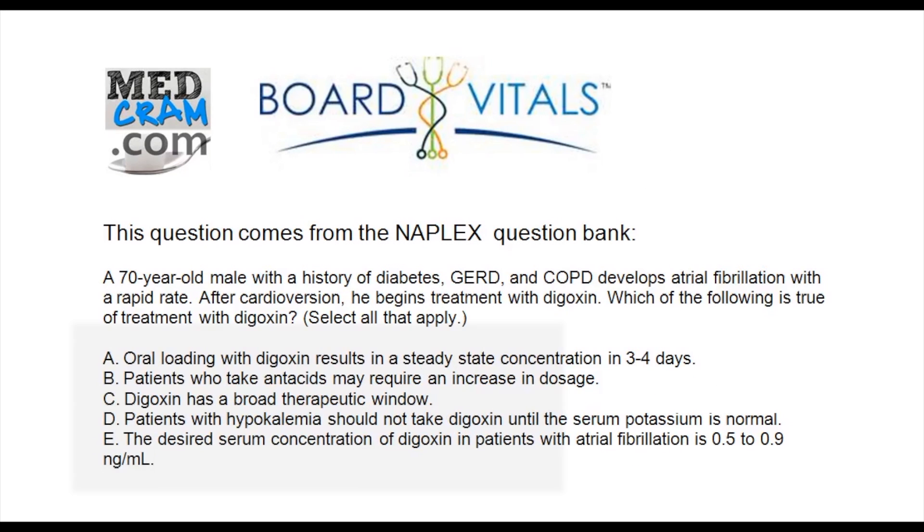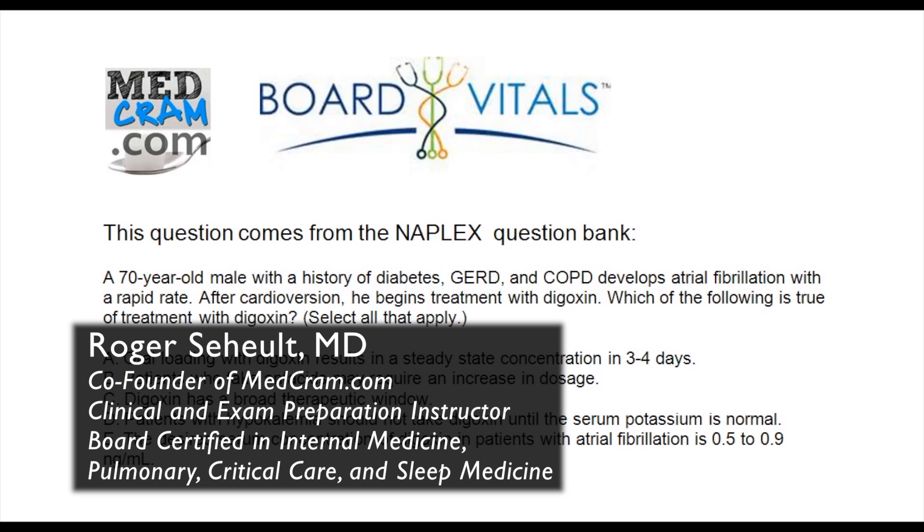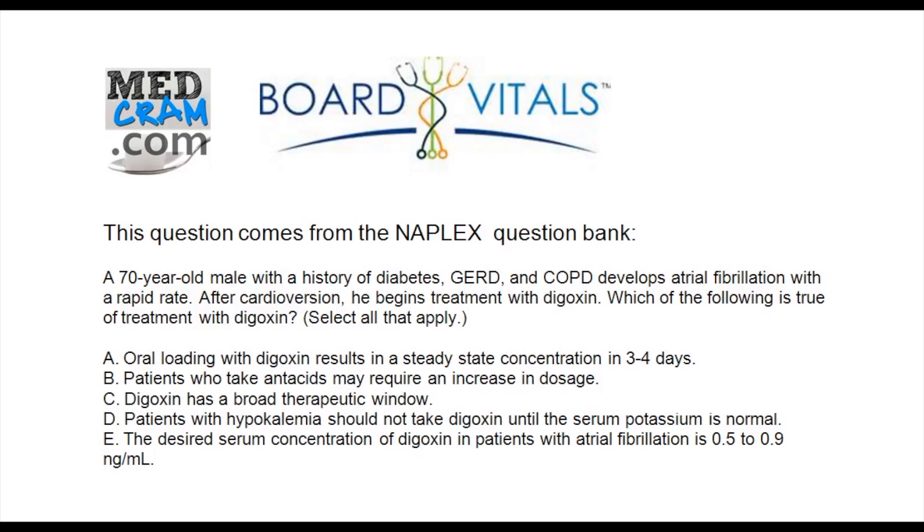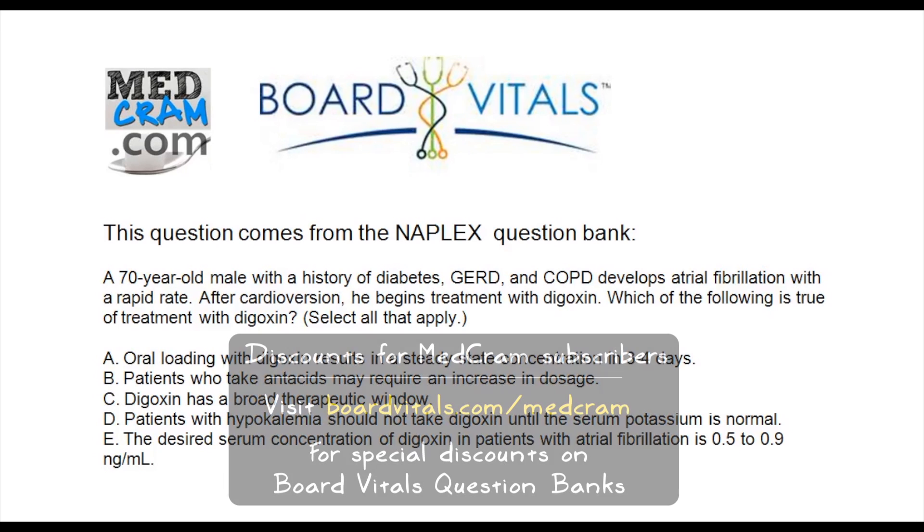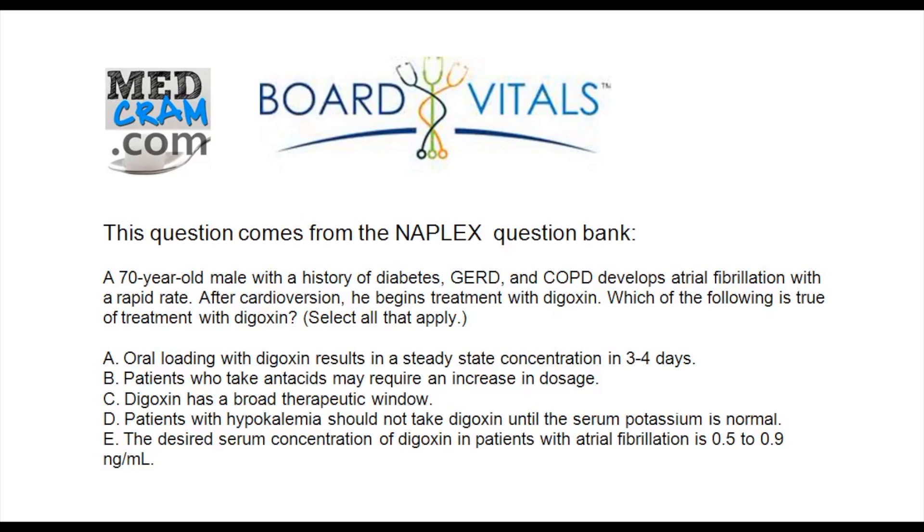Welcome to another MedCram lecture with Board Vitals. This question comes from the NAPLEX question bank. A 70-year-old male with a history of diabetes, GERD, and COPD develops atrial fibrillation with a rapid rate. After cardioversion, he begins treatment with digoxin. Which of the following is true of treatment with digoxin? Select all that apply.